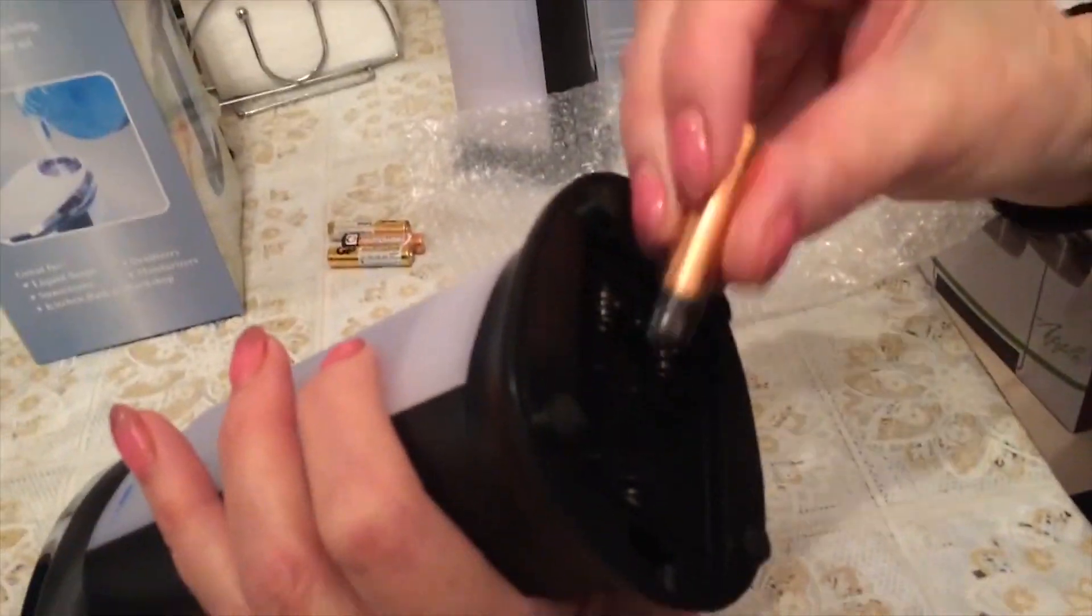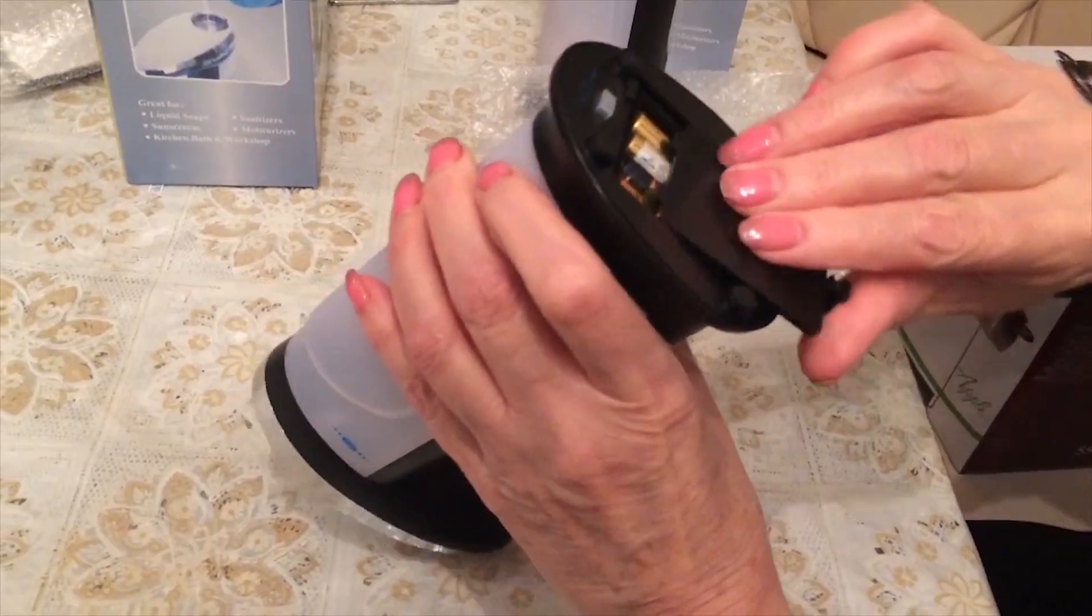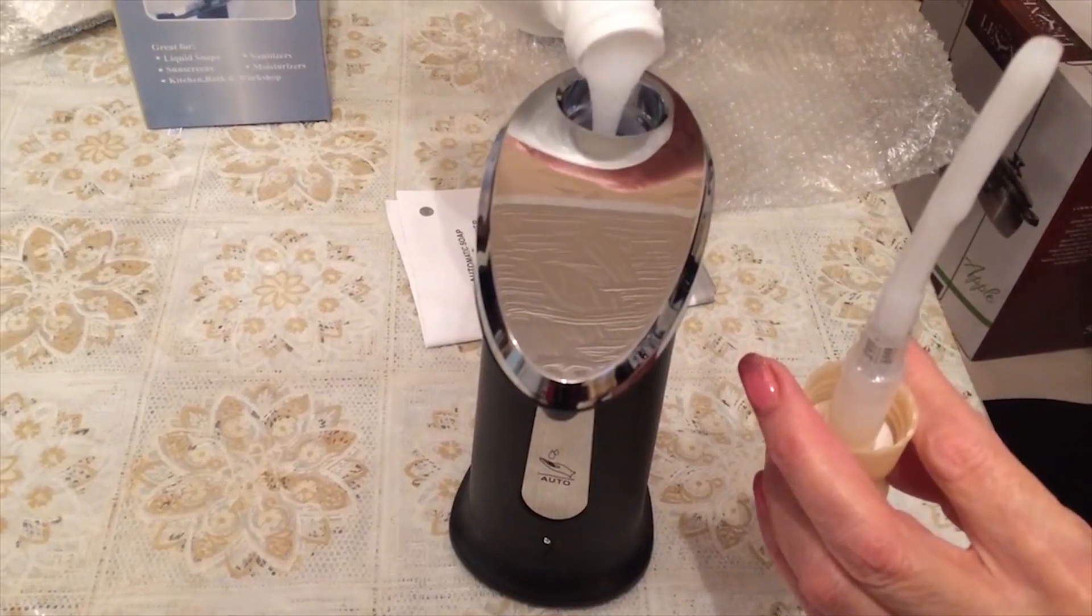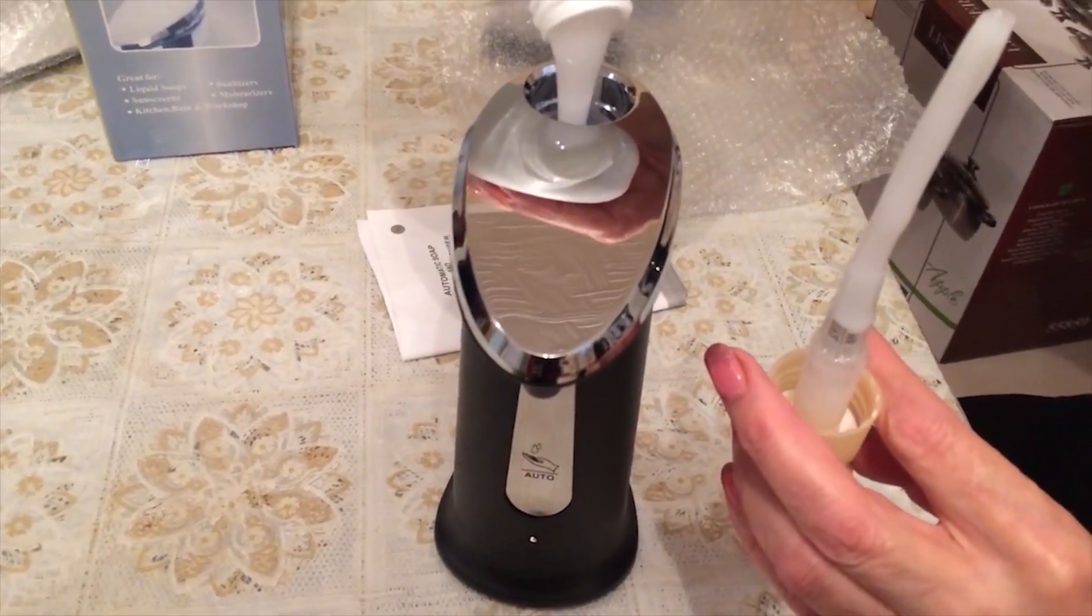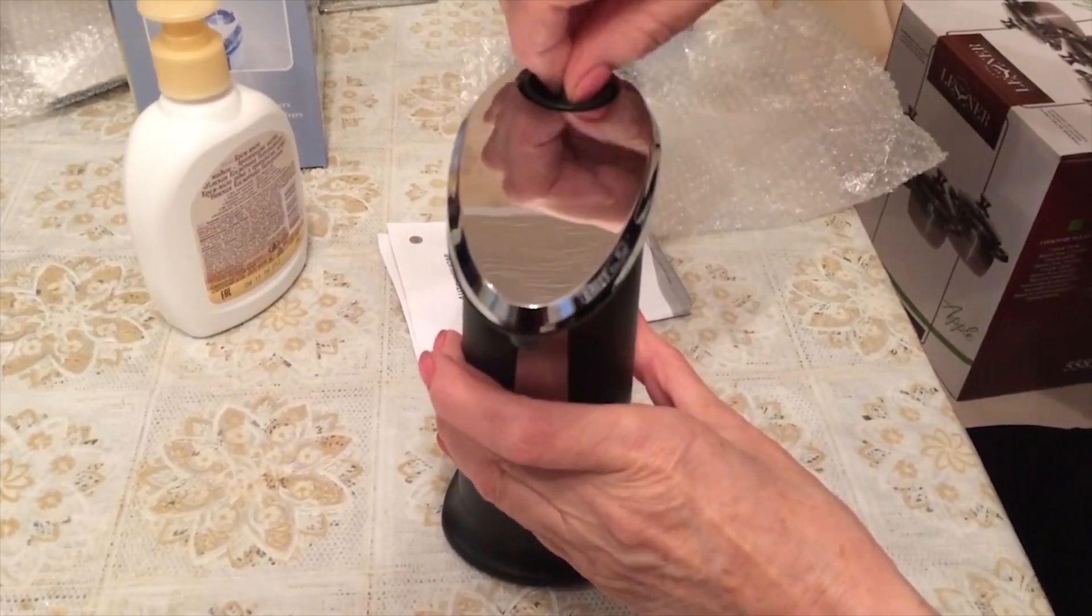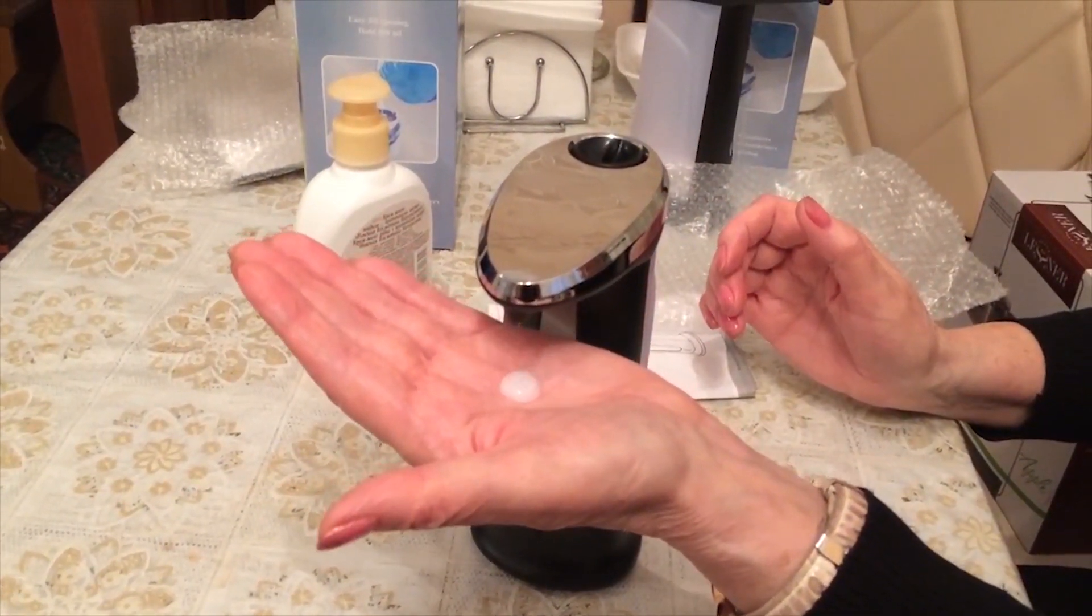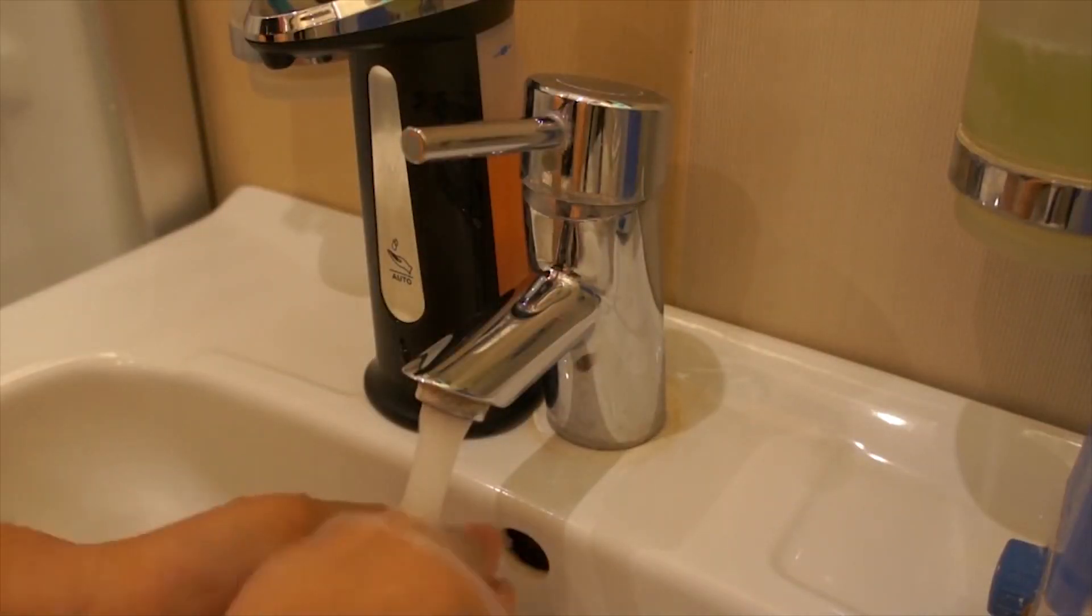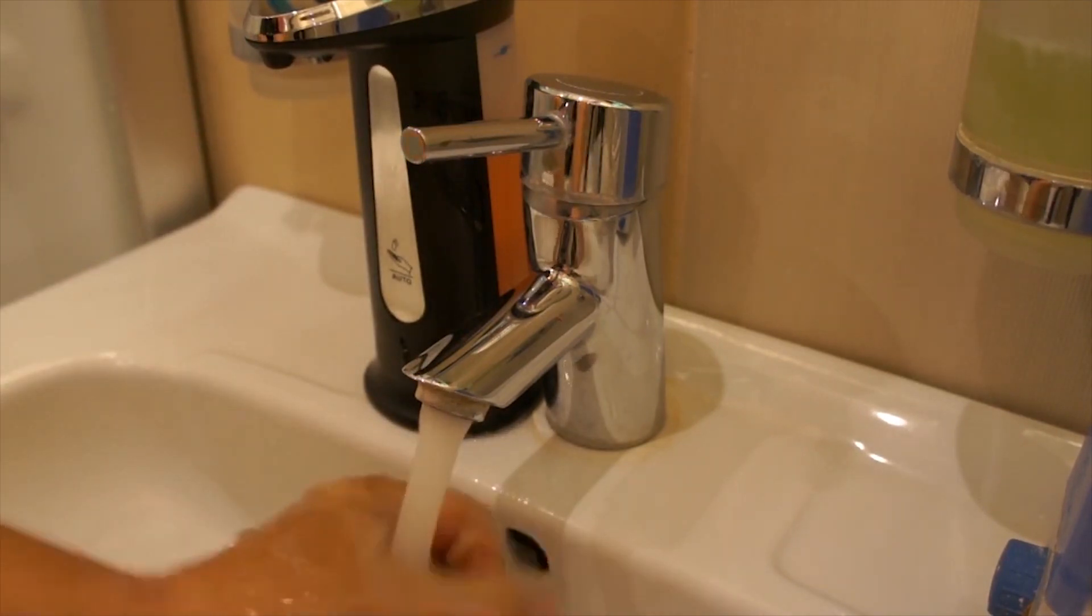Hello everyone! Check out this automatic soap dispenser, which works from 4 AAA batteries. First, you should open the tank and fill it with liquid soap. Then, it's ready for usage. That's how it works in a natural environment. It's a very useful thing.